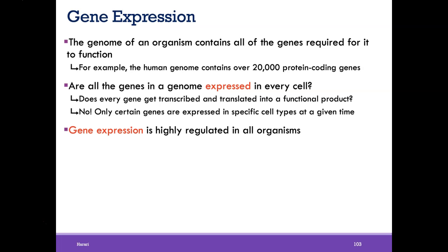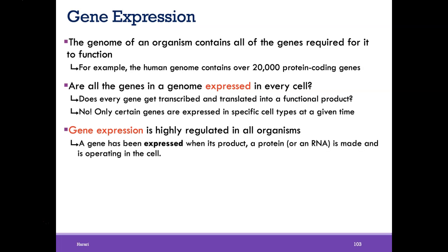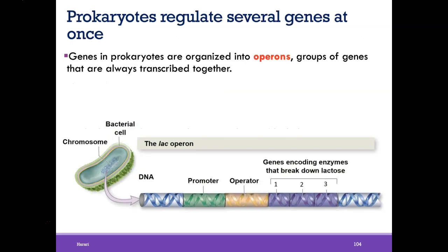Only certain genes are expressed in specific cell types and at specific times, so gene expression is highly regulated in all organisms. A gene has been expressed when its product, which is usually a protein, is made and operating in the cell. Gene expression controls which proteins and enzymes are made, and those should only be produced as needed. For example, a python about to swallow a gazelle will start producing digestive enzymes as it begins to swallow it — it doesn't need those enzymes when there is no gazelle.